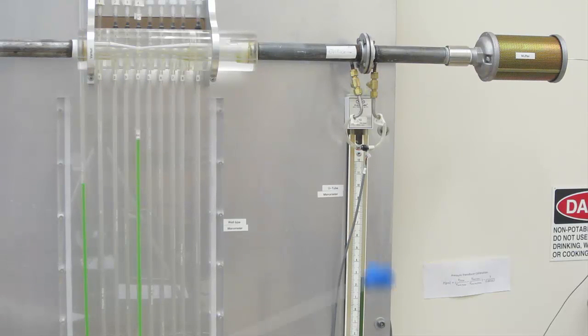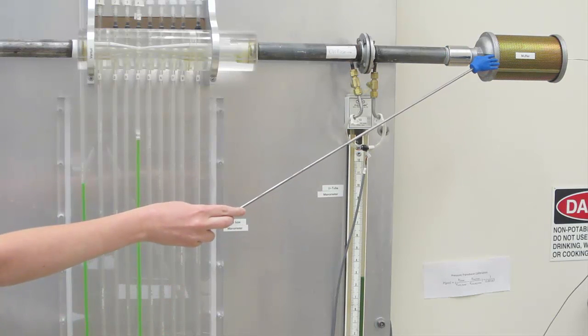There is an orifice plate as well, which will be used to calculate the mass flow rate of air flowing through the pipe. The U-tube manometer and corresponding pressure transducer are also connected to the orifice plate. Finally, the air flow exits through the muffler shown here.